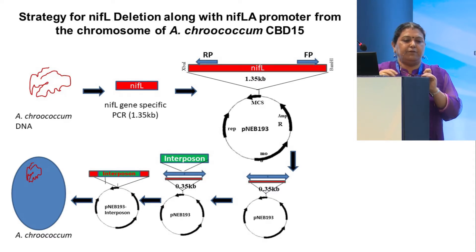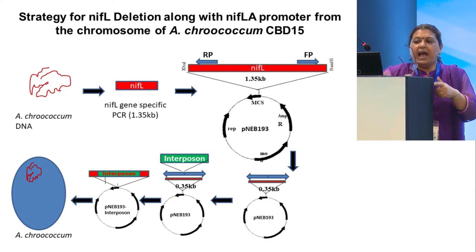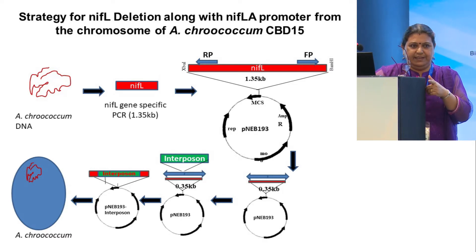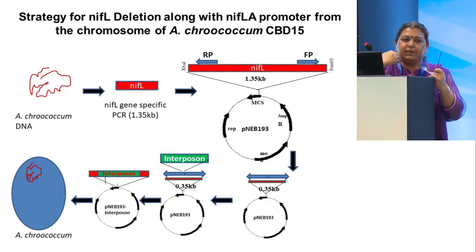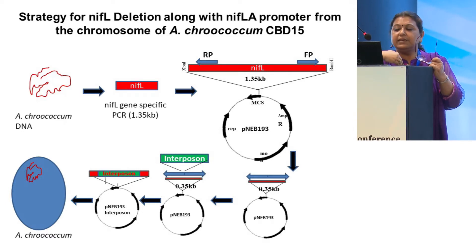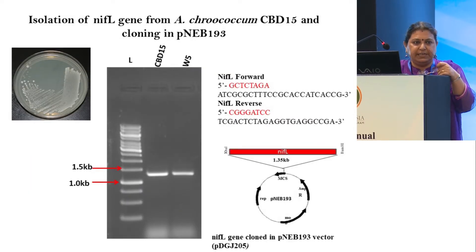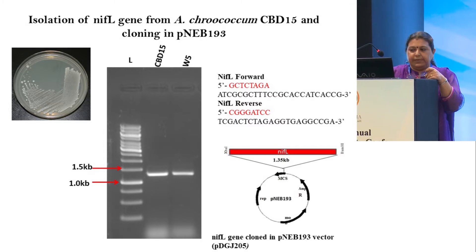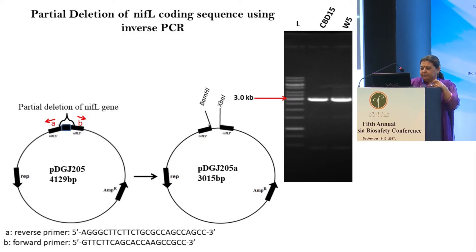Our strategy basically involved deletion in NIF-L combined with a constitutive promoter. When there is deletion in NIF-L, you have knocked out NIF-L, and NIF-A will continue to synthesize nitrogenase enzyme and perform nitrogen fixation even in the presence of ammonia. The strategy involved first isolating the NIF-L gene, and based on its sequence, we performed the deletion and made a construct.